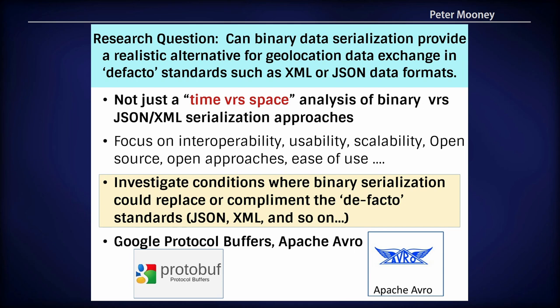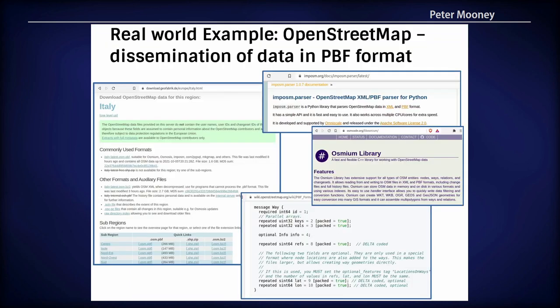We chose two very popular binary approaches: Google Protocol Buffers, which the OpenStreetMap community will be well familiar with in recent years, and Apache Avro, the binary data serialization format used quite widely in Apache Hadoop. OpenStreetMap has really set the pace here, in our opinion, as a large global data provider disseminating data in binary format.